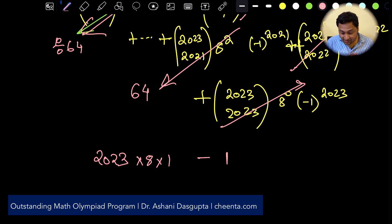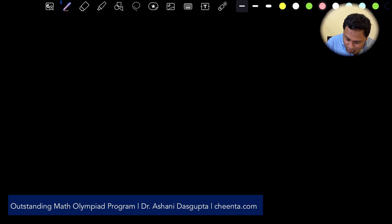Okay so we have 2023 times 8 plus 1 minus 1. That is what is remaining because all other terms will produce remainder 0. Now at this point if you do not know that remainders actually add up you might get confused so I'll quickly tell you that but I assume that everyone almost everyone who is watching this knows that.